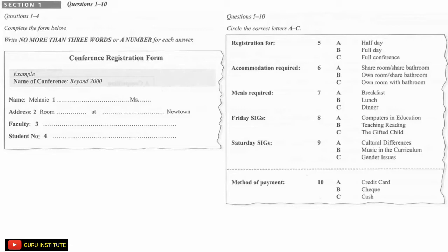You should answer the questions as you listen because you will not hear the recording a second time. Look at the registration form. Listen carefully and answer questions 1 to 4. Good morning. Good morning. Can I help you? Yes. Is this where we register for the Beyond 2000 conference? Yes.